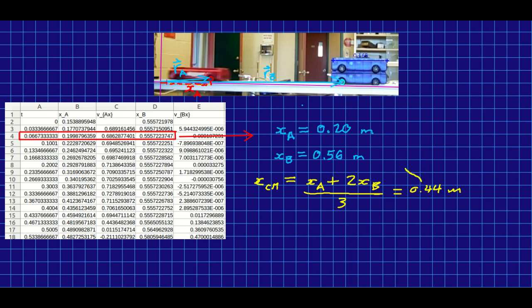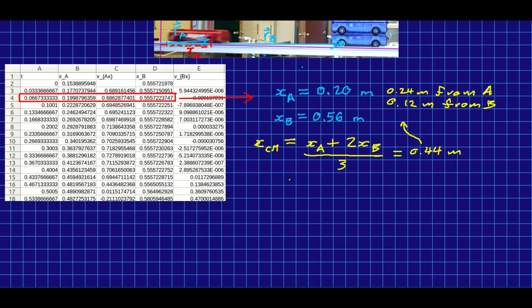And for once, I kind of care about this number because there's something interesting about it. Look, it's 0.24 meters from cart A, and it's 0.12 meters from B. So it's twice as far from A, and A has half the inertia. That's interesting. So that's a clue as to what's going on here.